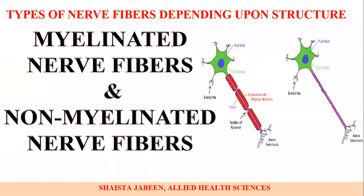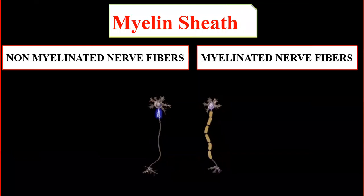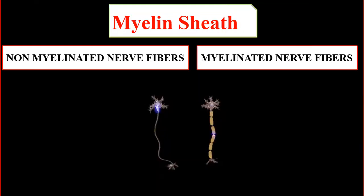This video is about the types of nerve fibers on the basis of histology or on the basis of their structure. On the basis of their structure, the nerve fibers are of two types: myelinated nerve fibers and non-myelinated nerve fibers.